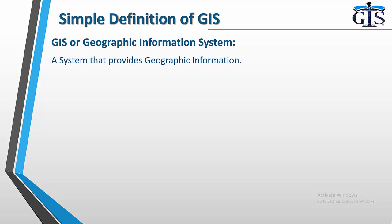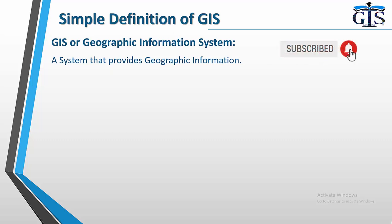But the simple definition of GIS already exists inside this term. GIS means Geographic Information System. So the simple definition of GIS is a system that provides geographic information — meaning any kind of system which provides geographic information is known as GIS. It could be hardware, it could be software, it could be survey related work and many more. Any type of system which provides us location-based or geographic-based information is known as GIS.